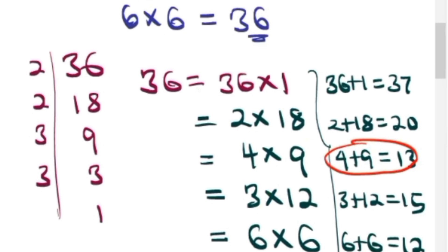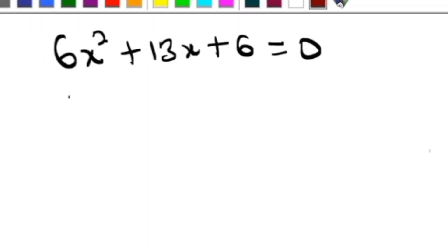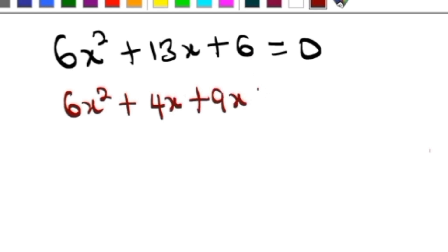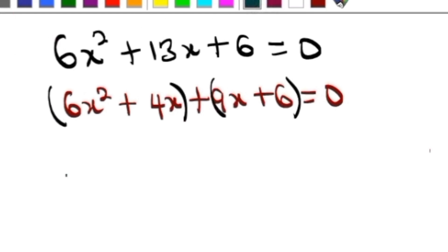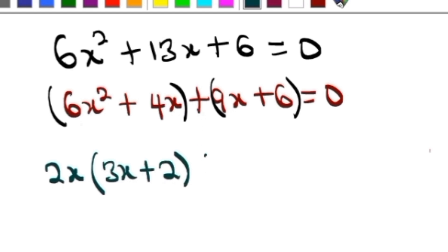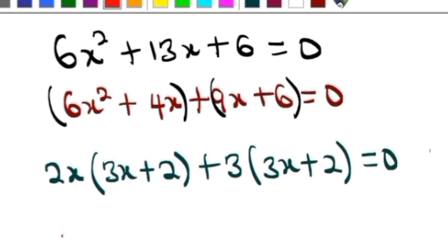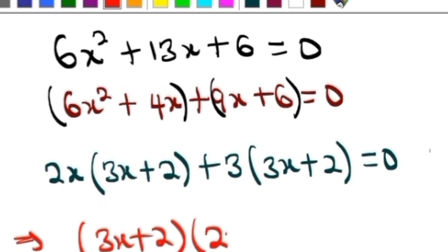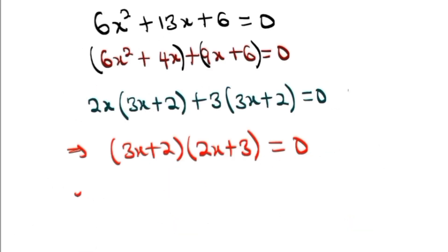So we rewrite 6x² + 13x + 6 as 6x² + 4x + 9x + 6 = 0. Factorizing: 2x is common in the first two terms giving 2x(3x + 2), and 3 is common in the last two terms giving 3(3x + 2). So (3x + 2) is common, giving (3x + 2)(2x + 3) = 0.